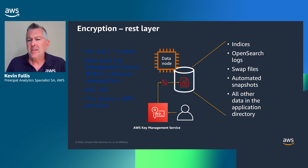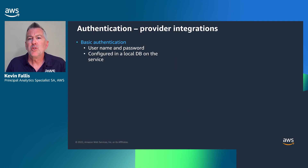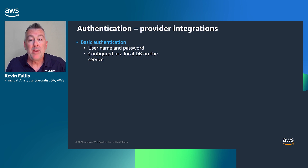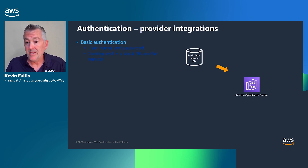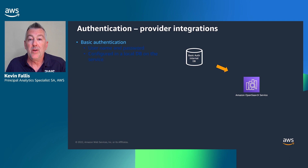From an authentication perspective, there are multiple provider integrations — three of them. The first is basic auth, which most of us know: a username and password in a configured local database. It gives you a level of security above and beyond no authentication. You put a user in the basic auth database, and then you can sign on to the Amazon OpenSearch service or programmatically use those credentials to interact with the data on the service.